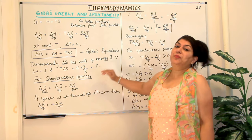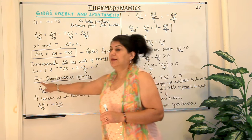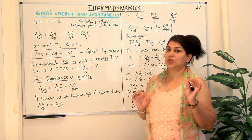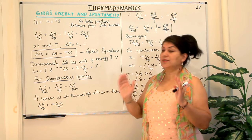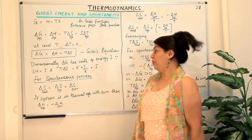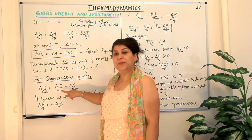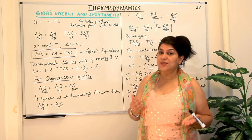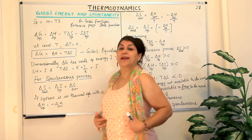In the previous video, we understood that for a spontaneous process, the total entropy change for a system and its surroundings should be positive — that is, delta S total should be greater than zero. Delta S total is the sum of delta S of the system plus delta S of the surroundings.